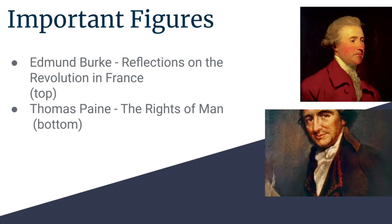Some important figures were Edmund Burke, who wrote Reflections on the Revolution in France, and it became one of the greatest intellectual defenses of European conservatism. He basically condemned the barbaric nature of the peasants' revolution and advised that it shouldn't be that way. Thomas Paine is another important figure, and he wrote The Rights of Man. He basically responded to Burke's argument by defending Enlightenment principles and France's revolution, so he was kind of the foil of those ideas.